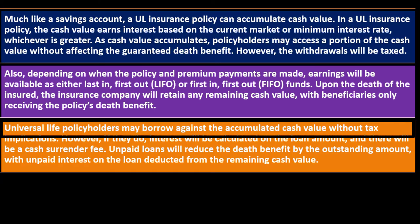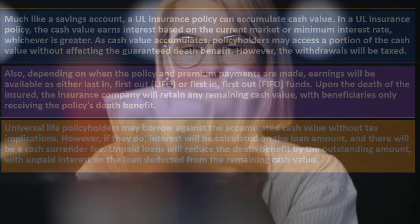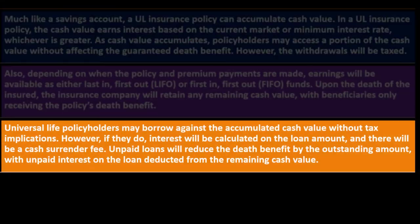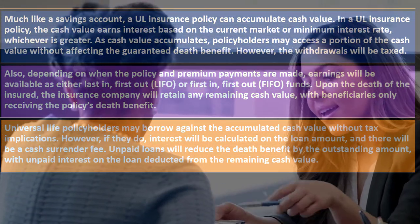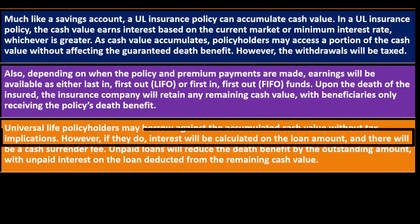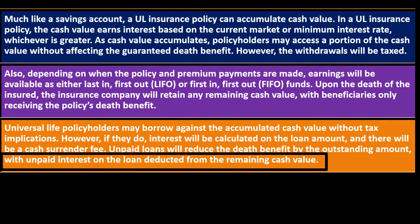Universal life policyholders may borrow against the accumulated cash value without tax implications. You've got this capacity to use that cash value possibly as collateral — if you really needed money and couldn't pull all the money out, maybe you could take a loan against it using it as collateral. Although, of course, then you would have to pay interest on the loan. Interest will be calculated on the loan amount and there will be a cash surrender fee. Unpaid loans will reduce the death benefit by the outstanding amount, with unpaid interest on the loan deducted from the remaining cash value.